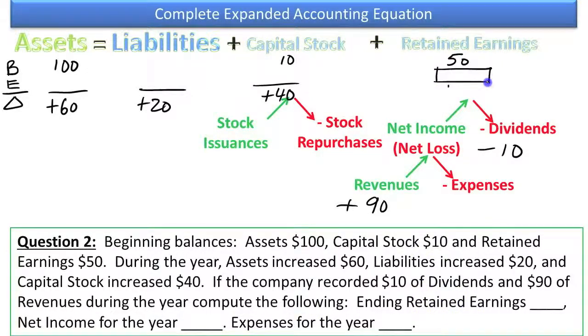Ending retained earnings, net income, and expenses. So I'm only going to put a box for the missing information. Can we solve for any of these right off the bat? The answer is we really can't without some additional work. You need to look at each of these as a formula. There are horizontal formulas and vertical formulas. Horizontal uses the balance sheet equation, and vertical uses the idea of beginning plus change equals ending. I'm going to solve for this horizontal expanded accounting equation. $20 of liabilities plus $40 of capital stock gives us $60 plus something equals $60. Well, that something would be zero. Retained earnings didn't change. If retained earnings didn't change and we started with $50 in retained earnings and it didn't change at all, then that must mean that we ended the year with $50 of retained earnings.